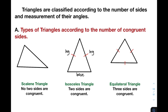Triangles are classified according to the number of sides and measurement of their angles. So we know that in a triangle, we have different parts of it, like the sides and its angles. And in our discussion today, those parts are the basis on how to classify the type of triangles.